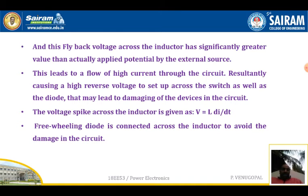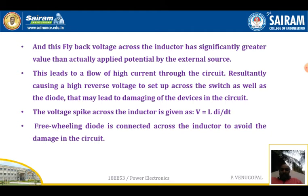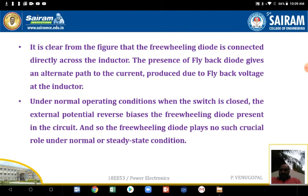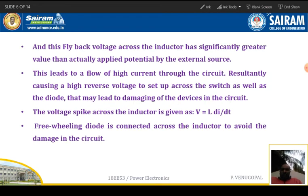The voltage spikes across the inductor are given by V = L × (dI/dt), where dI/dt is the rate of change of current. The freewheeling diode is connected across the inductor to avoid damage to the circuit and to avoid the excessive reverse voltage developed across the inductor, thereby protecting the circuit. The need of the freewheeling diode is to protect the circuit from this high negative potential.